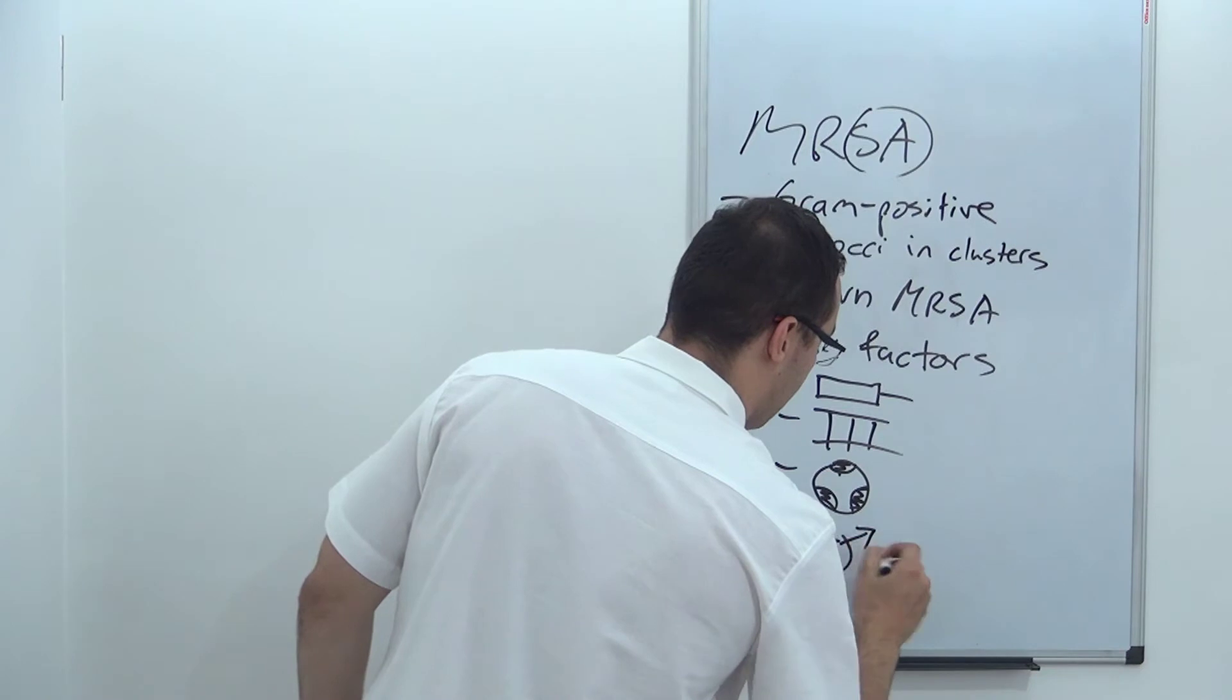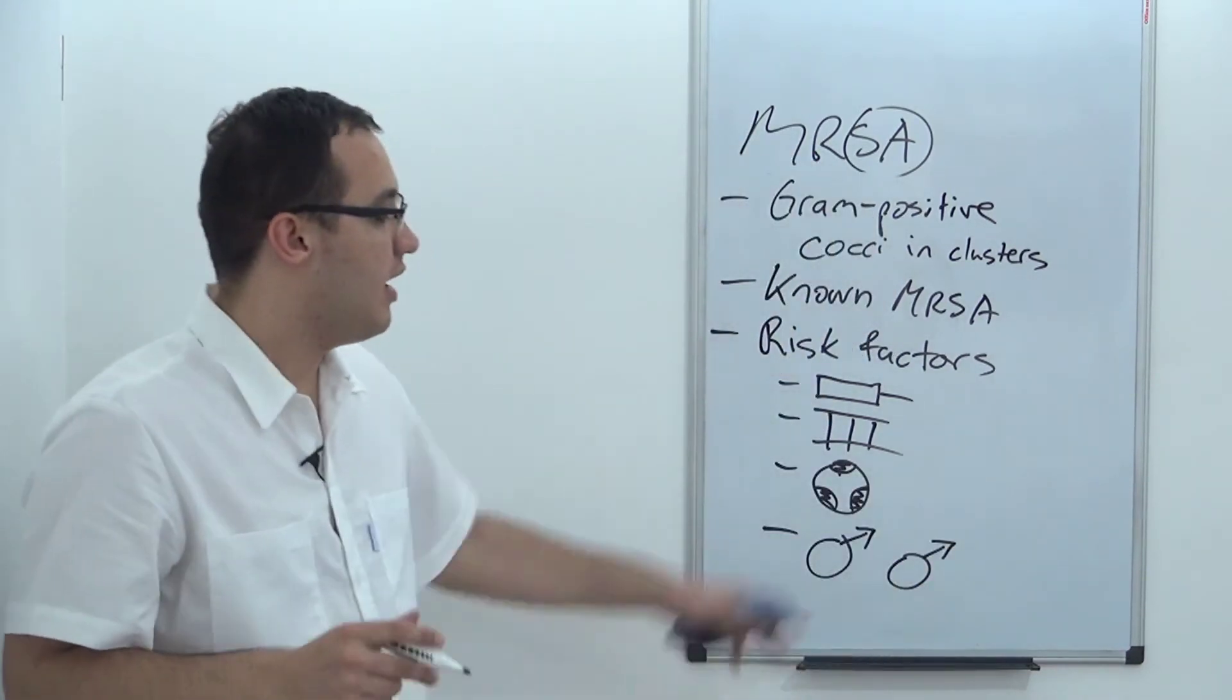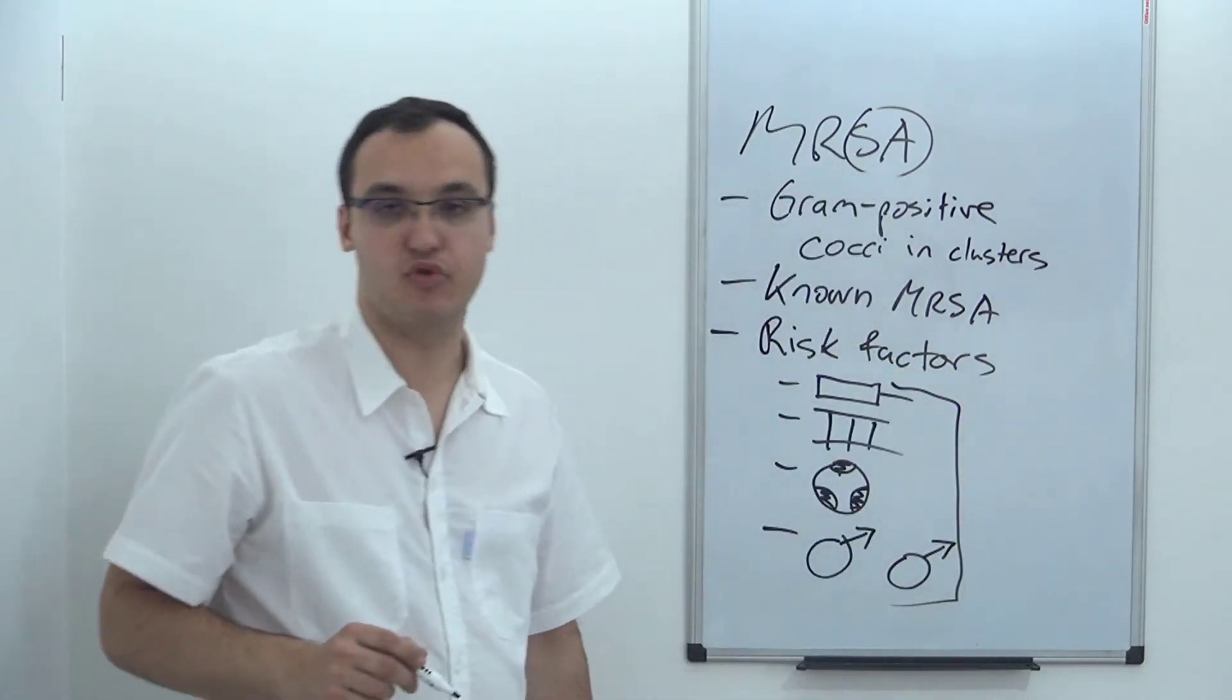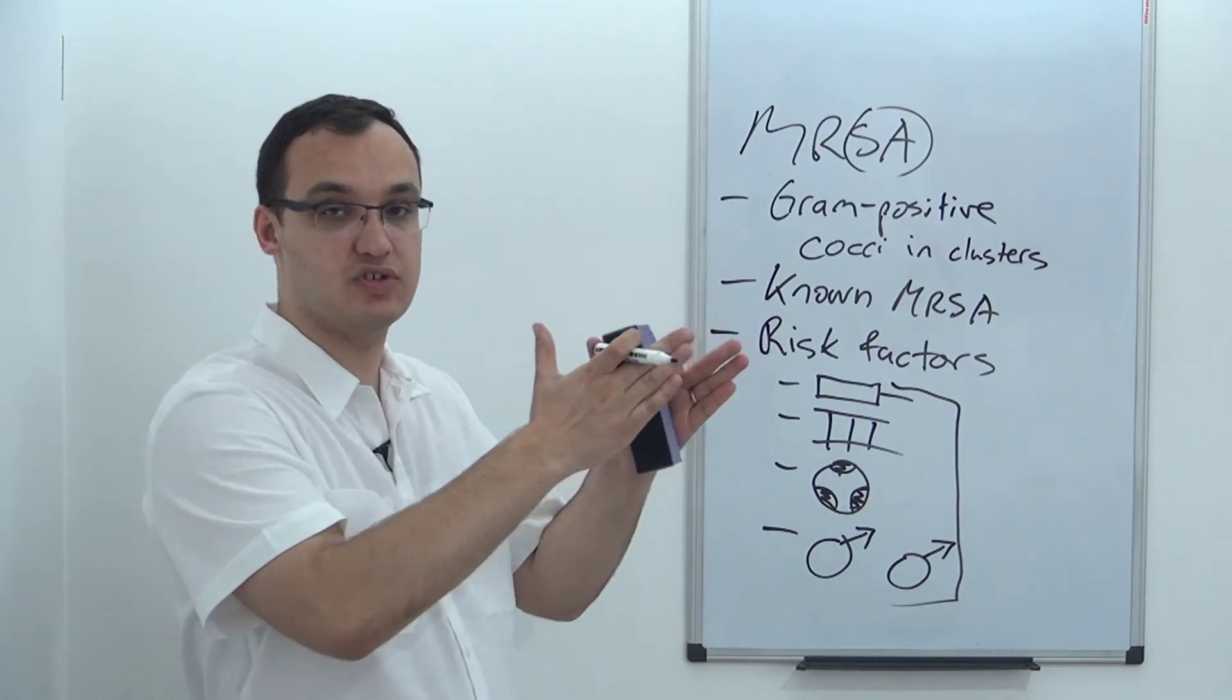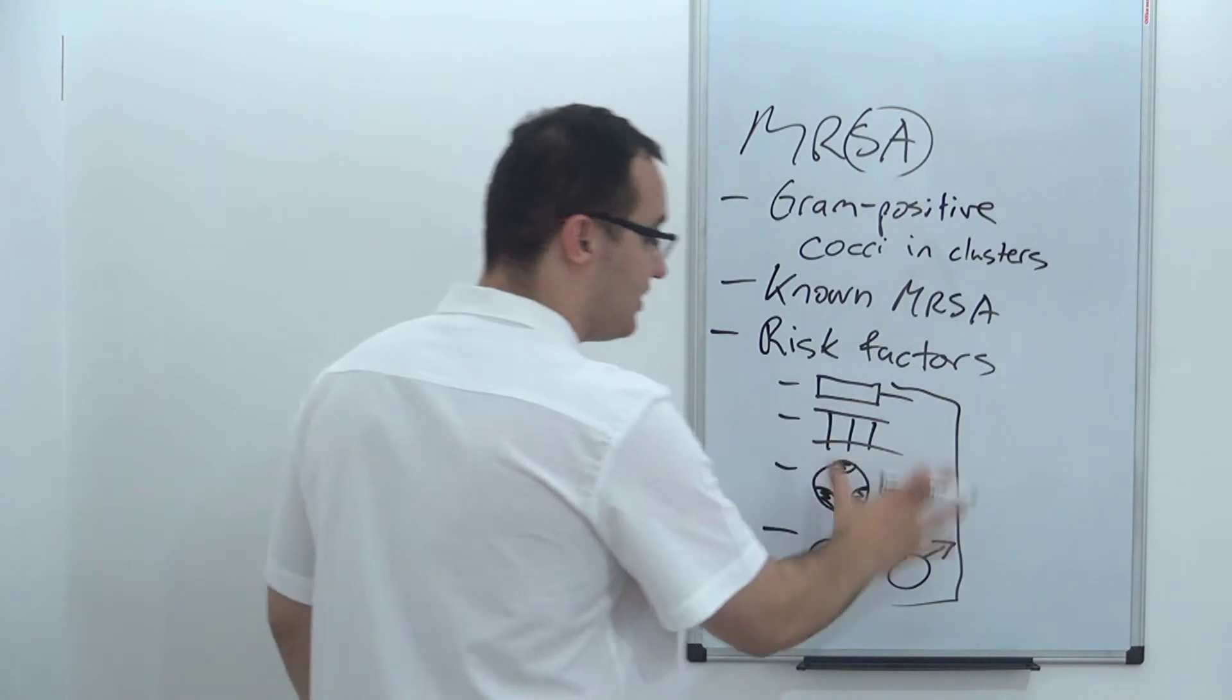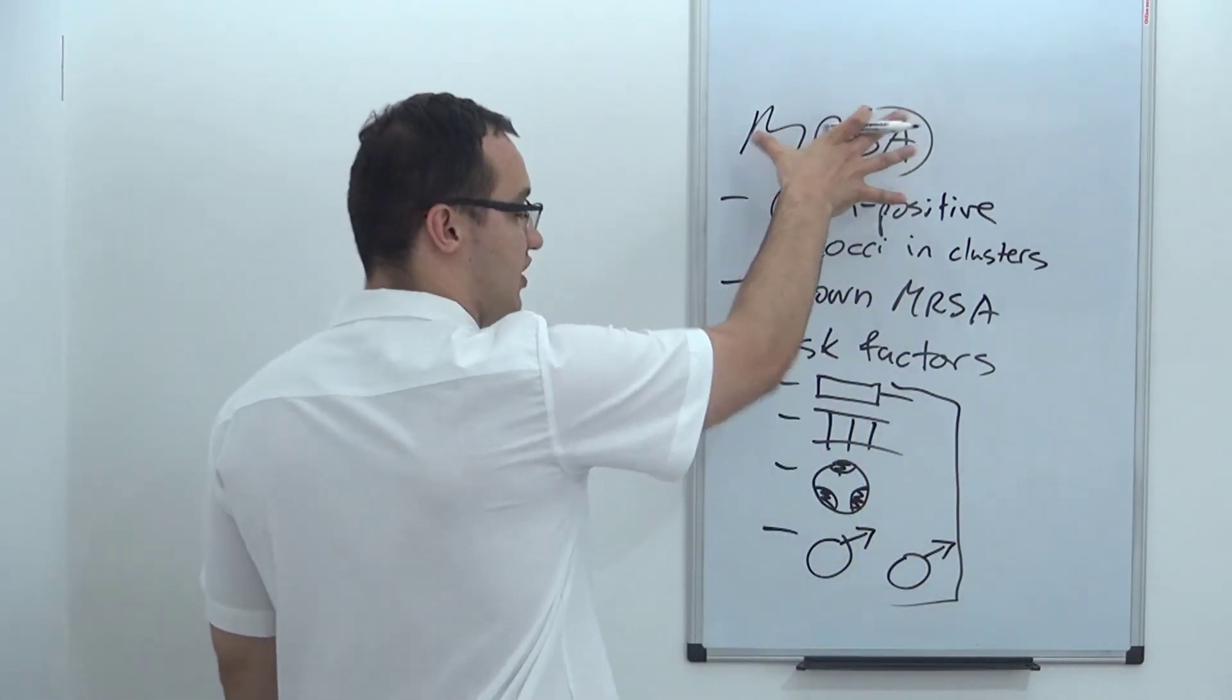Then you have homosexuals. So this will represent two guys that love each other. These type of patients all have higher probability of MRSA, which means that I need to treat these patients as they would have MRSA. This is enough to include the treatment for MRSA.